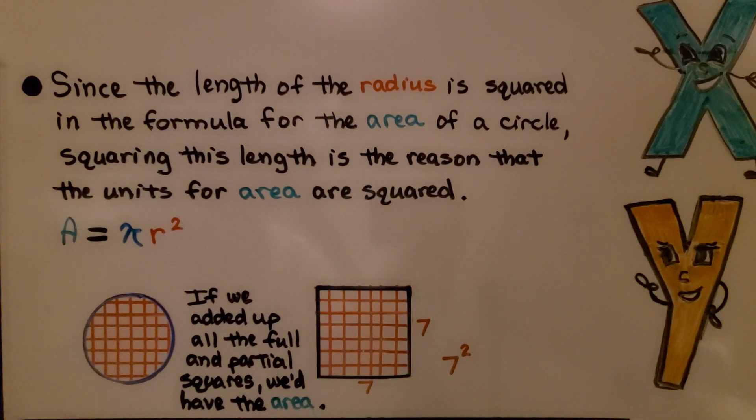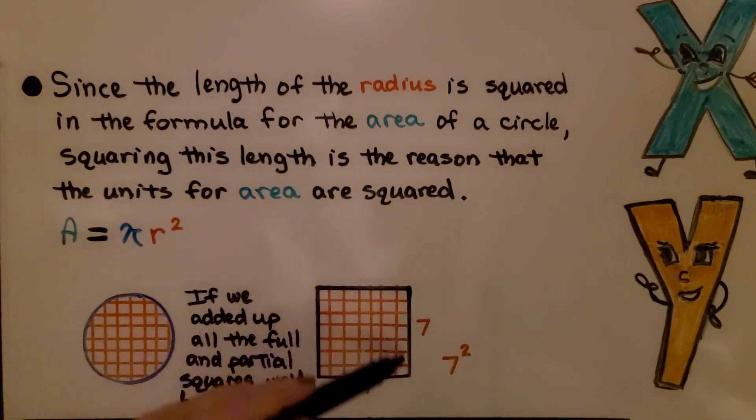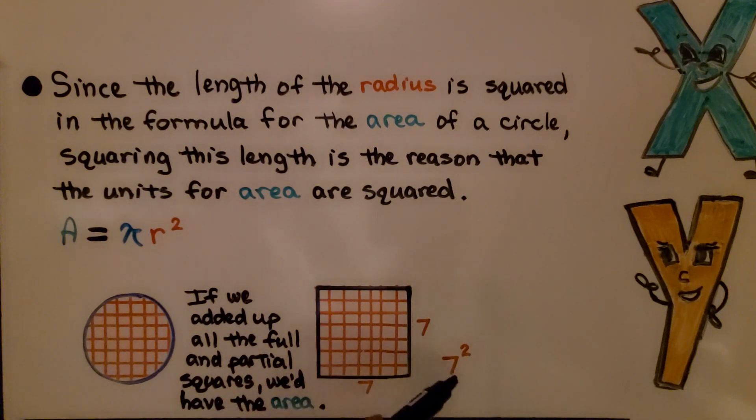So if you remember when we did the top of the cookie, we got 28.26 centimeters squared. Well, since the length of the radius is squared in the formula for the area of a circle, squaring this length is the reason that the units for area are squared. So if we had an actual square and we had 7 centimeters going across and 7 centimeters going for height, we would do 7 times 7, which is 7 squared. There would be 49 squares here. Well, we could even do the same thing for a circle. If we put a grid on a circle, if we added up all the full squares. So here's a full one, here's a full one, here's a full one. See the full ones?